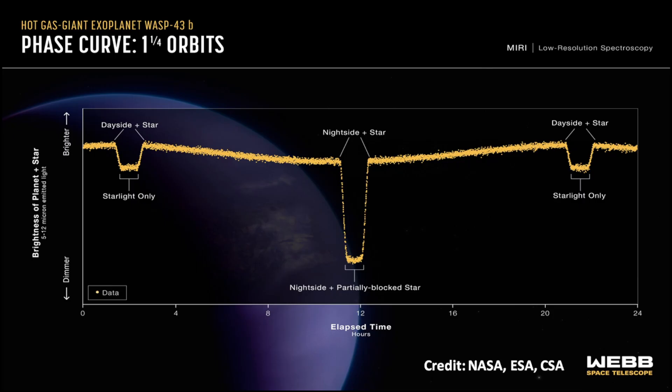Phase curve spectroscopy is a method of measuring tiny changes in the brightness of the star-planet system as the planet orbits the star.